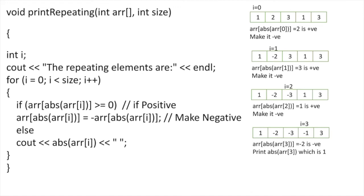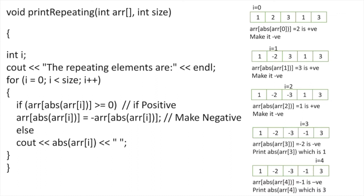When i=3, we check array[abs(array[3])]. Array[3] is -1, absolute of -1 is 1, and array[1] is -2, which is negative. So we print this value — 1 is printed. When i=4, we check array[abs(array[4])]. Array[4] is 3, absolute of 3 is 3, and array[3] is -1, which is negative. So we print 3. The output is 1 and 3, as these elements are repeating more than once.